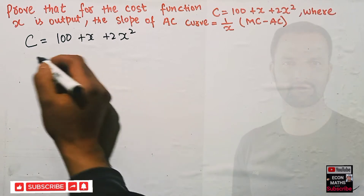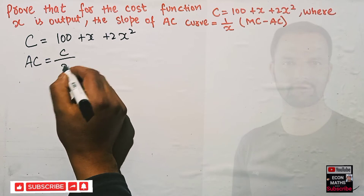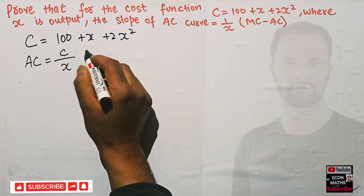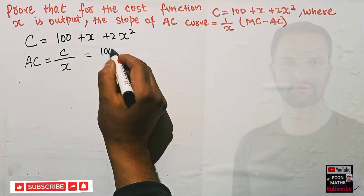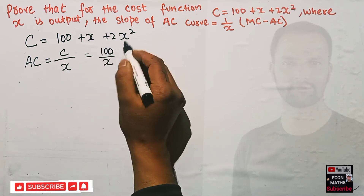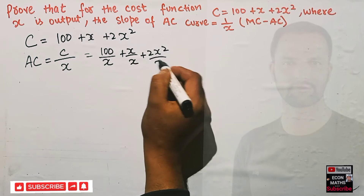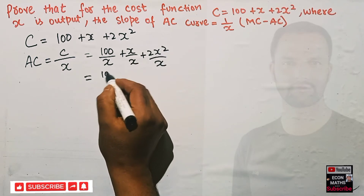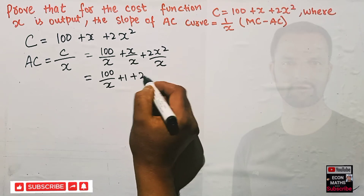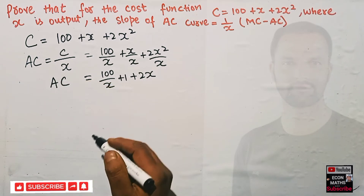Average cost is simply total cost divided by output x. Dividing each term by x gives us: 100/x + x/x + 2x²/x, which simplifies to 100/x + 1 + 2x. This is our average cost.